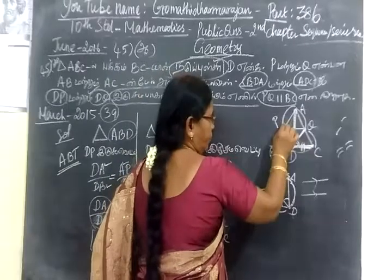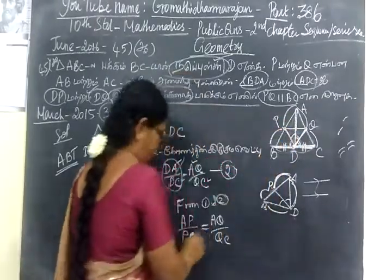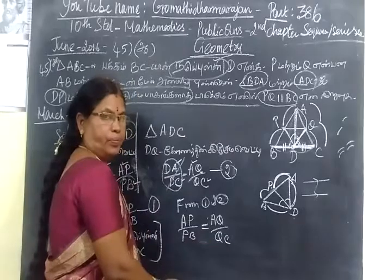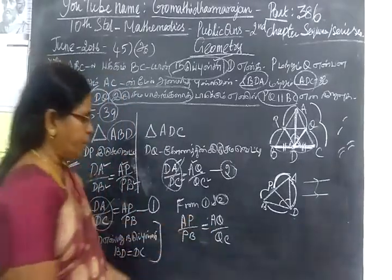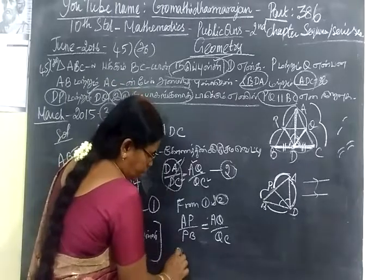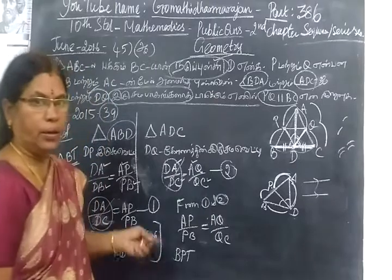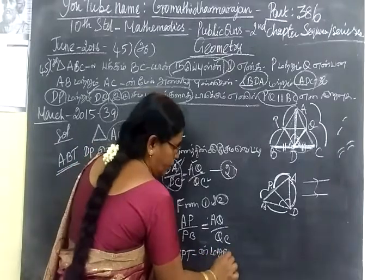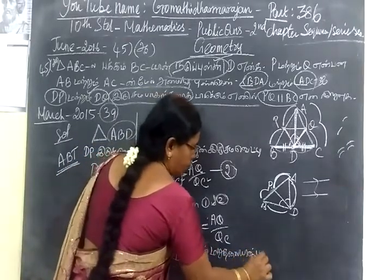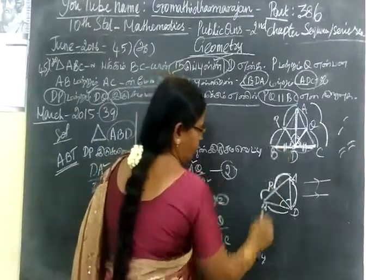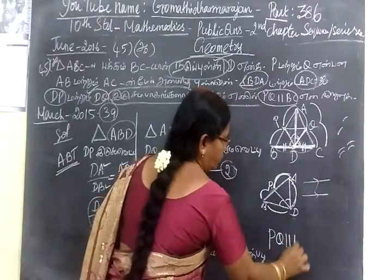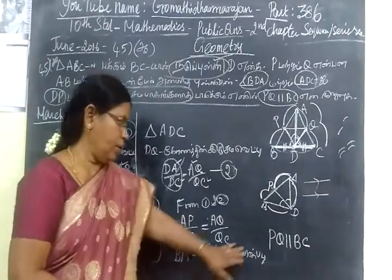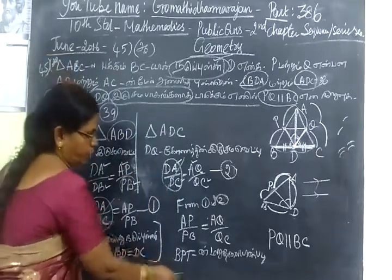So this will be AP by PB equal to AQ by QC. This will be AP by PQ. Then PB equal to AQ by QC and AQ by QA. Now I am going to use PQ parallel to BC. Thank you.